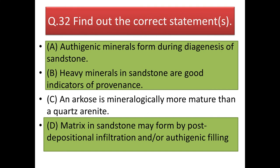Next question: find out the correct statement. Authigenic minerals formed during the diagenesis of sandstone — correct. Heavy minerals in sandstone are good indicators of provenance — also correct. An arkose is mineralogically more mature than a quartz arenite — wrong, because mineralogically, a rock with more quartz is more mature, and quartz arenite has more quartz than arkose (in which feldspar is dominant), so quartz arenite is more mineralogically mature.